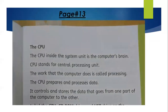Now look at page number 13 of your book — it is all about the CPU. The CPU inside the system unit is the computer's brain. CPU stands for Central Processing Unit. All the work that is done on the computer is called processing. The computer saves all that data in the CPU, and that whole process of saving data is known as processing. The CPU prepares and processes data; it controls and stores the data that goes from one part of the computer to the other.